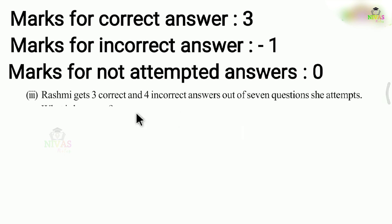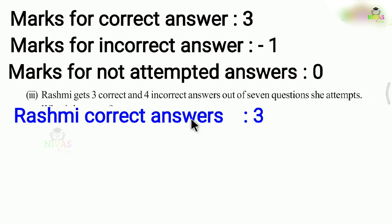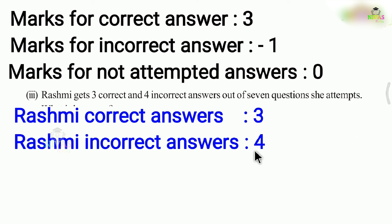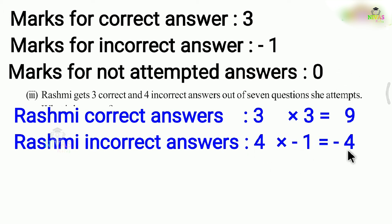The next problem: Reshma gets 3 correct and 4 incorrect answers out of 7 questions she attempts. The remaining 3 questions she did not attempt, so those get 0 marks. For 3 correct answers: 3 into 3 is 9 marks. For 4 incorrect answers: 4 into minus 1 is minus 4. So the total score is 9 plus minus 4, which equals 5 marks.